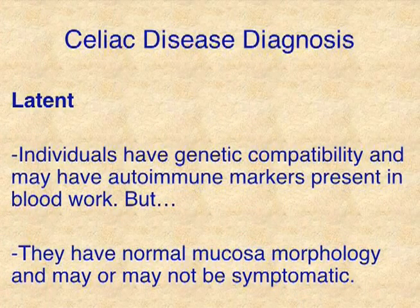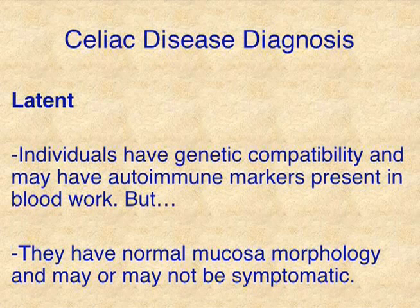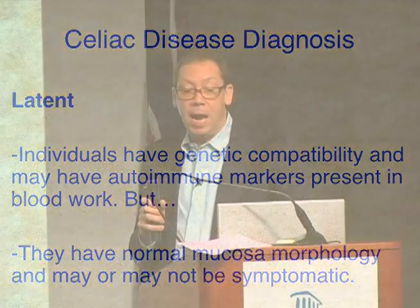The latent form: patients are genetically compatible, they may have autoimmune markers present in the bloodwork, but their intestinal mucosa is completely normal, and they may or may not be asymptomatic. So we're starting to get fuzzy. Where we started with a clean definition — an autoimmune process associated with genetic susceptibility and exposure to gluten — we're now seeing that a huge percentage of people actually have the disease, or at least a predisposition to it, who are either not manifesting it or have been missed in diagnosis.